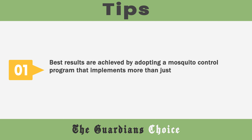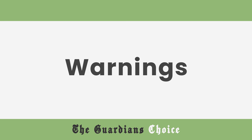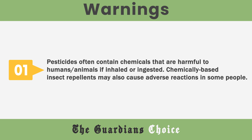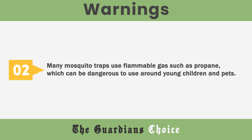Tips: Best results are achieved by adopting a mosquito control program that implements more than just one of the steps identified above. If you have neighbors in close proximity, try to discuss your mosquito control plan with them so you can work together to reduce the mosquito population in your area. Warnings: Pesticides often contain chemicals that are harmful to humans and animals if inhaled or ingested, and chemically-based insect repellents may also cause adverse reactions in some people. Many mosquito traps use flammable gas such as propane, which can be dangerous to use around young children and pets. Choose the method that works best for you and your situation to help reduce mosquito infestation.